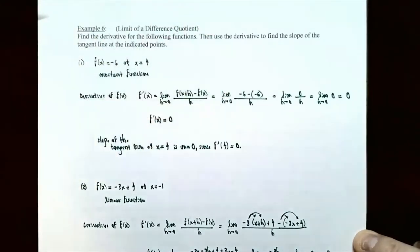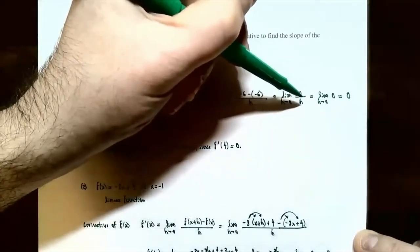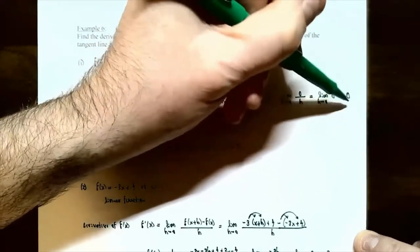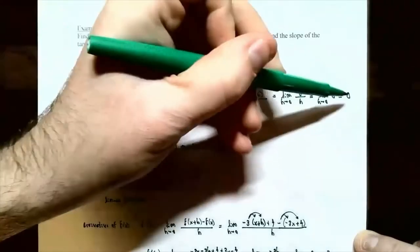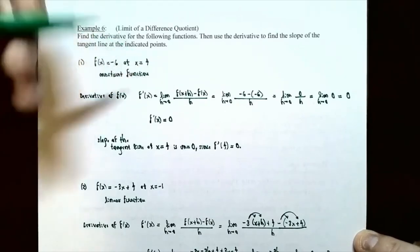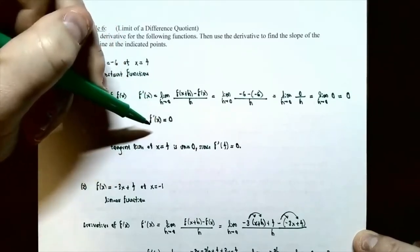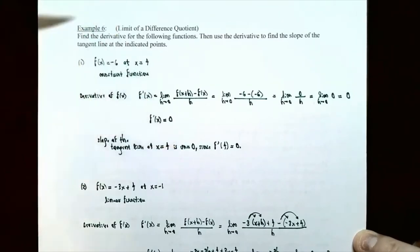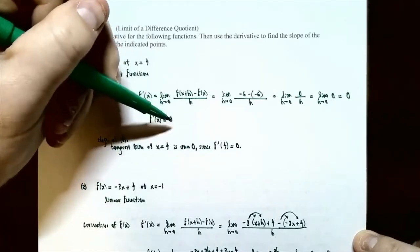Make sure you have the limit notation because we want to evaluate the limit. The numerator is 0 and the denominator is h, so 0 divided by anything is 0. The limit of a constant is just that same constant, so the limit of 0 is 0. Therefore, f prime of x equals 0, always, no matter what x is. The slope of the tangent line at x equals 4 is f prime of 4, which equals 0.